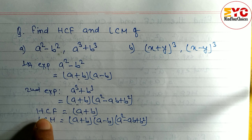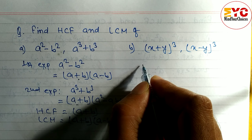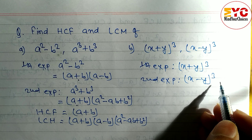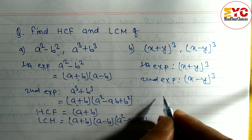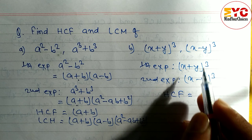We have two questions. In the first expression, we have a² minus b². The formula of a² minus b² is (a+b)(a-b). In the second expression, we have a³ plus b³. The formula of a³ plus b³ is (a+b)(a² - ab + b²). Now we have to find the GCF and LCM.